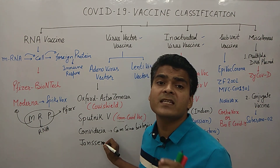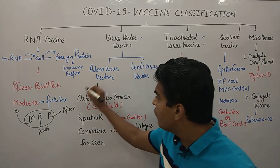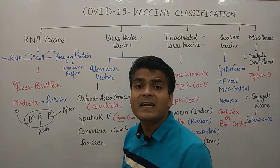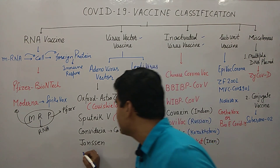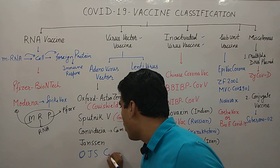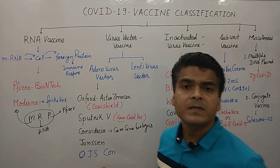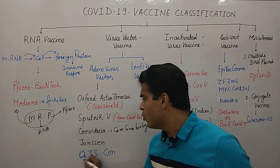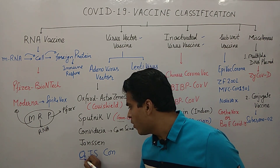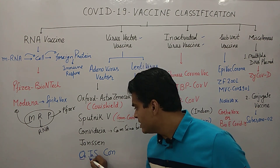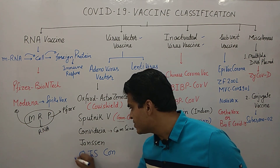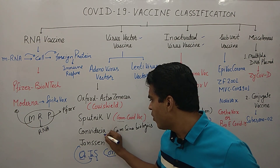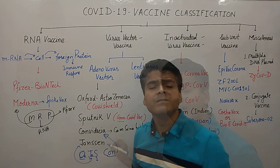Here is a trick to remember all adenovirus vector vaccines: OJAS CORN. O stands for Oxford, J for Janssen, A for AstraZeneca (Covishield), S for Sputnik, and CORN for Convidecia.